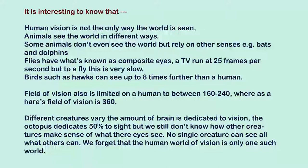Different creatures dedicate varying amounts of brain to vision — the octopus dedicates 50% to sight — yet we still do not know how other creatures make sense of what their eyes see. No single creature can see all that others can. What we perceive visually as human beings is not the full truth of visual perception; other creatures may have entirely different experiences of visual reality.